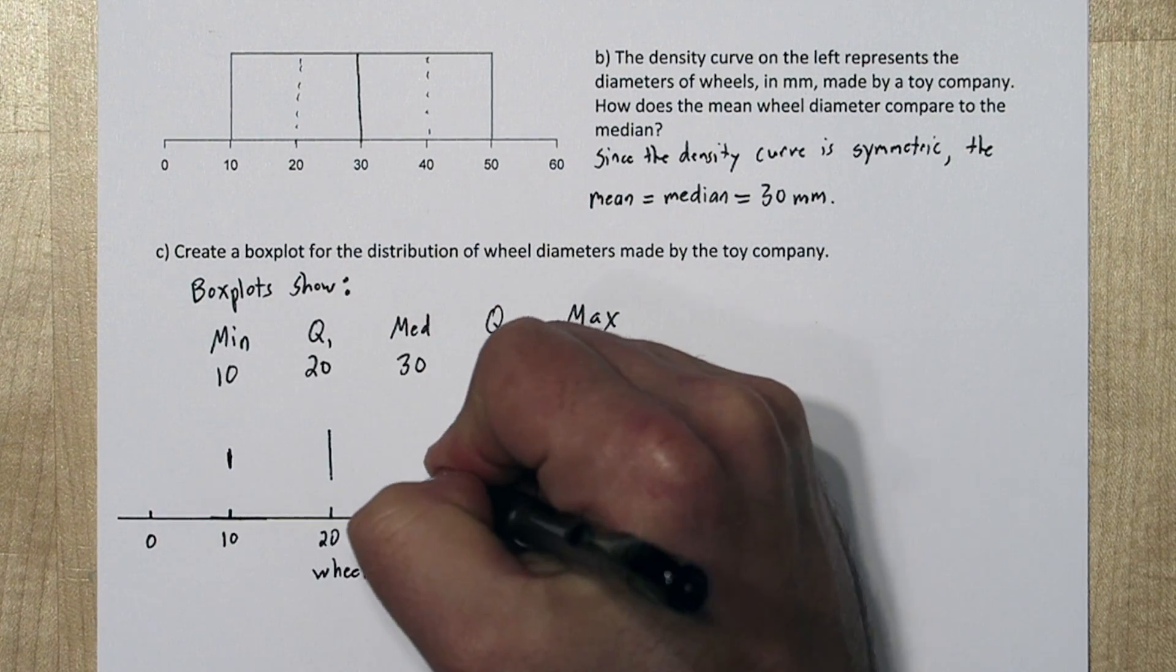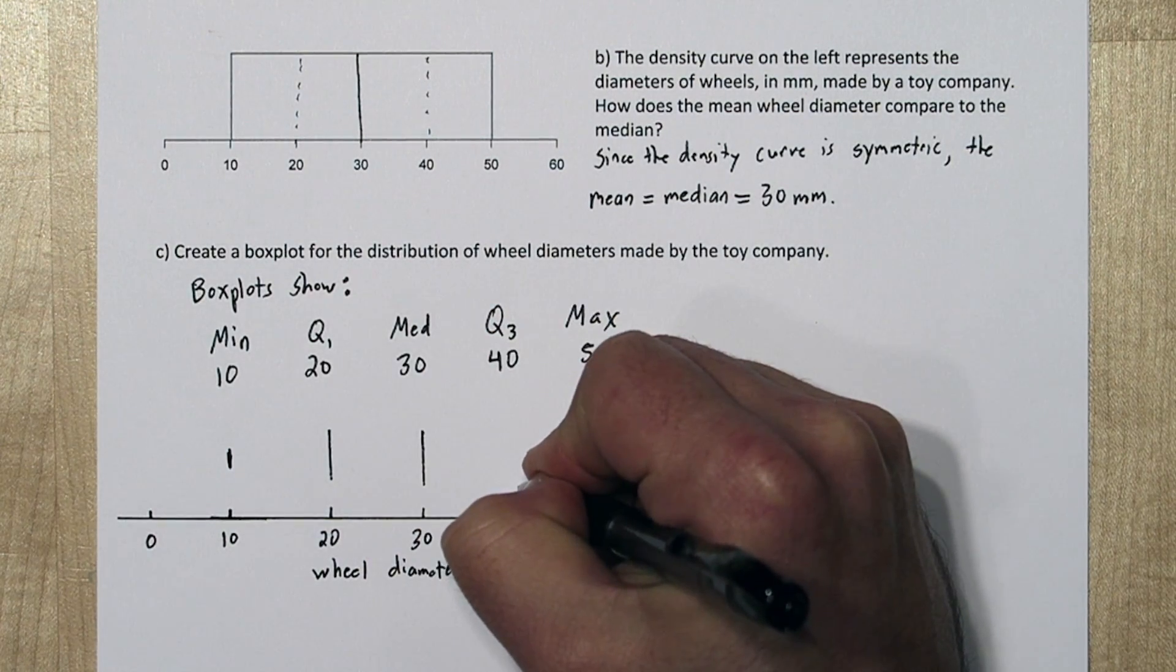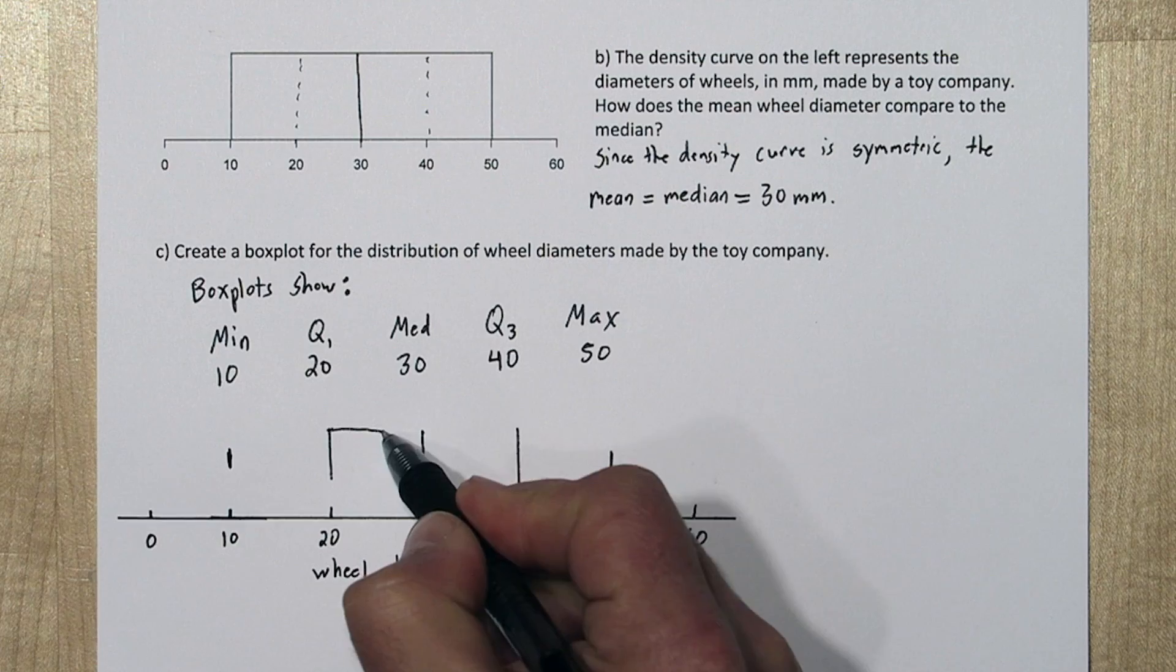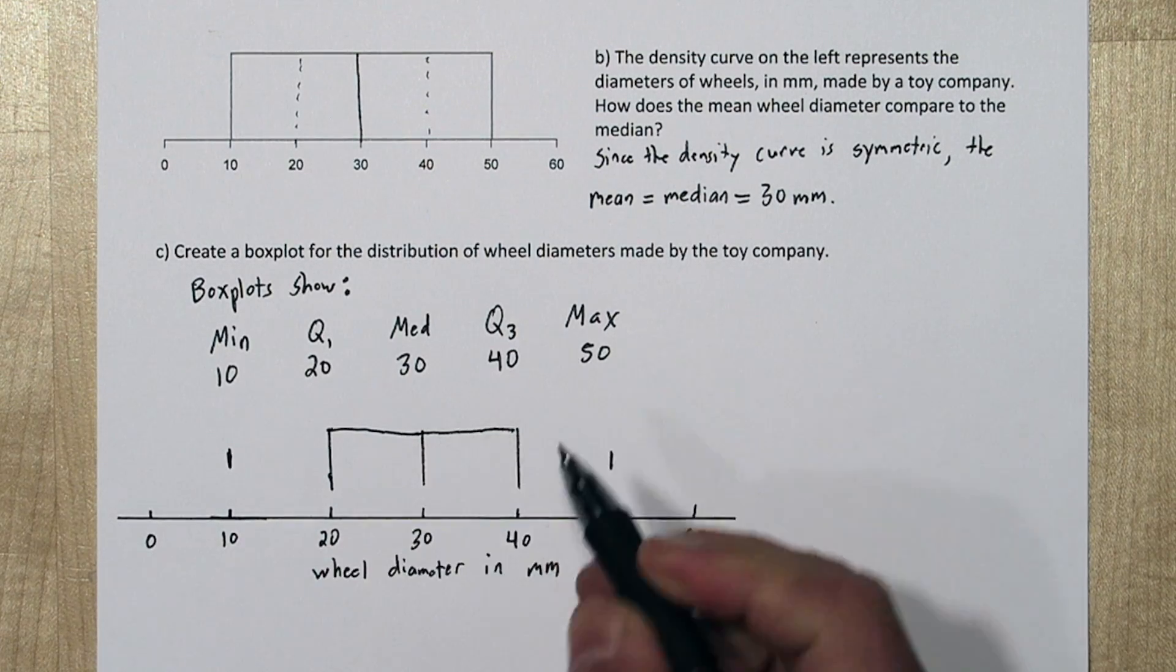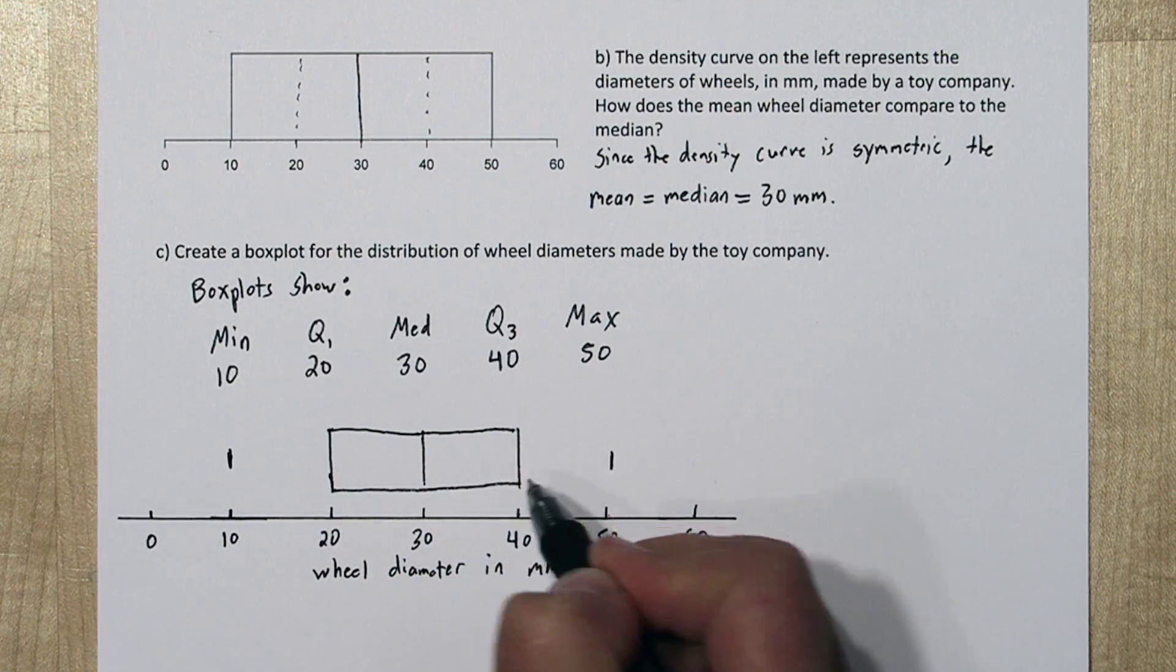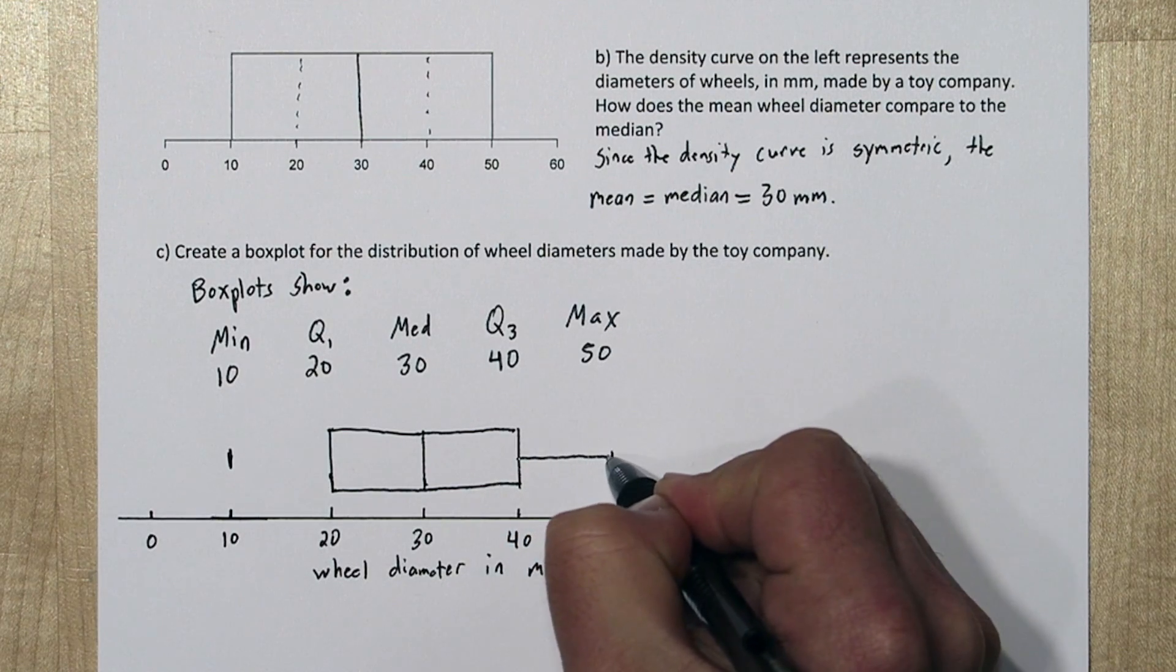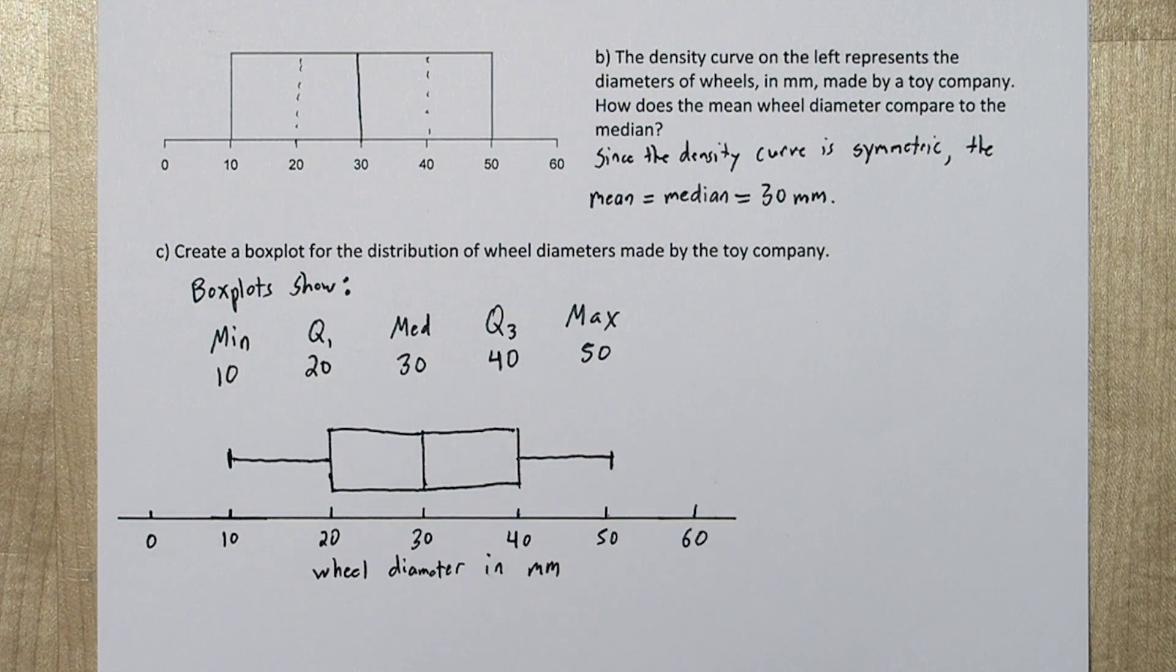Our quartile 1, median, and quartile 3 make up the box. So they're going to be larger vertical lines. And we'll connect them to make the box. Now all we need to do is draw whiskers out to our minimum and maximum. And we have our box plot.